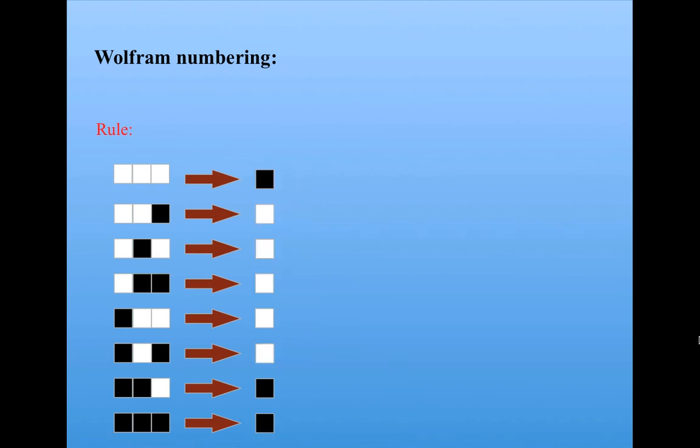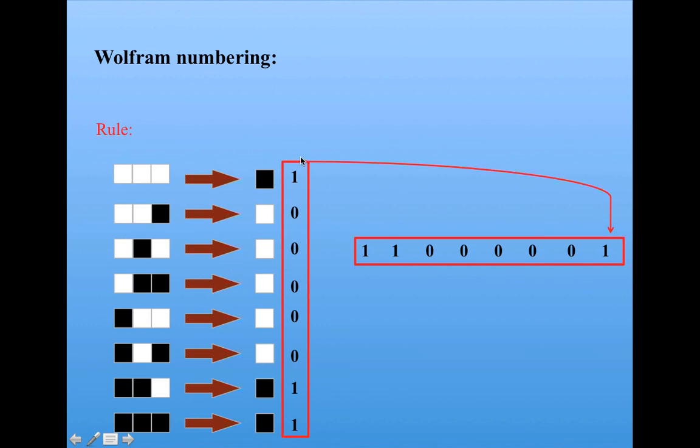Let's do one more example, just to make sure that you've got it. So here's my new rule. I assign 1s and 0s to the update state. I turn it on its side by flipping it over like this, and so I get 110000001.